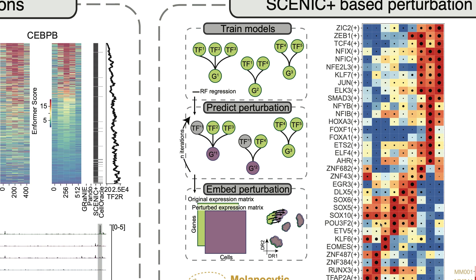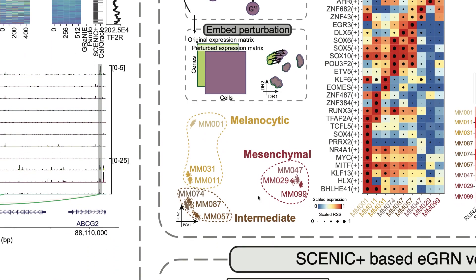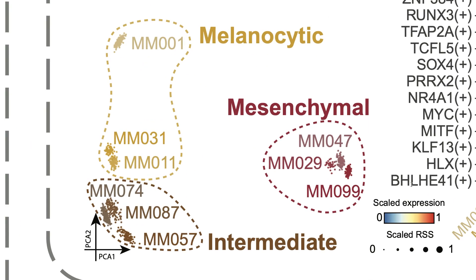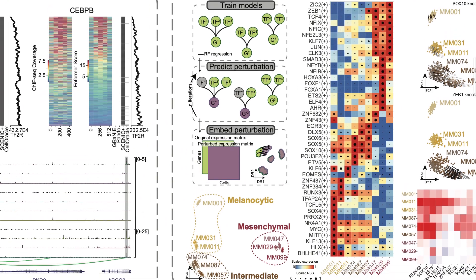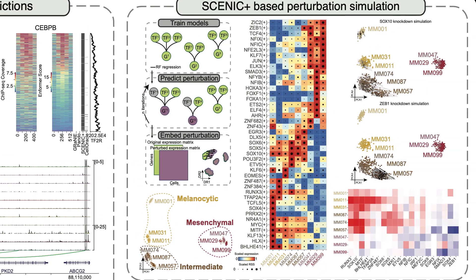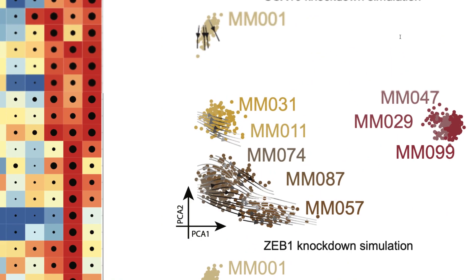The predictions of ScenicPlus can be used to simulate perturbations. To illustrate this, we analyzed melanoma cell lines. Melanoma cell lines reside in three main states: the melanocytic state, the mesenchymal state, and the intermediate state. Note that the first principal component represents the melanocytic to mesenchymal axis. ScenicPlus was able to identify the main regulators of the melanocytic state, the mesenchymal state, and the intermediate state.